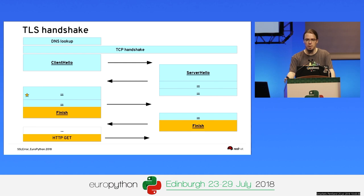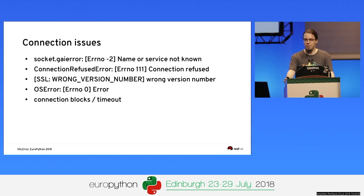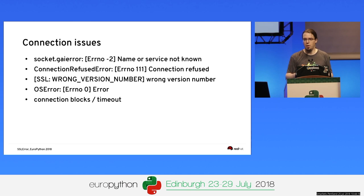Just establishing the initial TCP handshake, looking up the name, and sending the initial client hello can already go wrong in multiple ways. A 'name or service unknown' error usually means your hostname is unknown — maybe a DNS issue or a typo. There's also 'connection refused' — maybe the server or network is down. Sometimes you get 'wrong version number', or the server kills the connection with error number zero. In some cases it just blocks and hangs — from firewall issues to network connectivity to servers that don't understand a new protocol version.